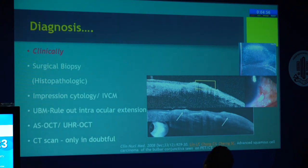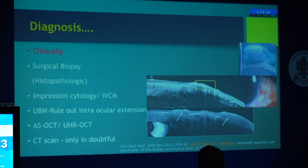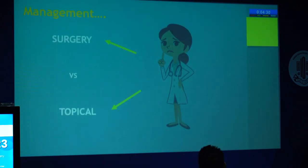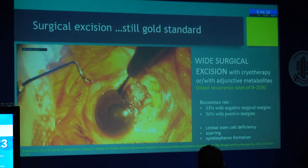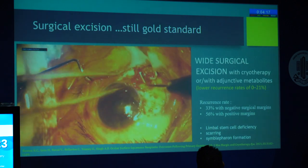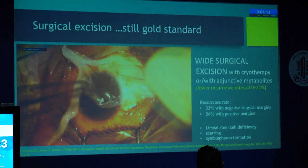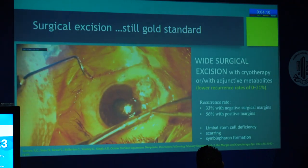Surgical biopsy is the gold standard for diagnosing these cases. We are more inclined towards non-invasive modalities like ultra-high resolution OCT or UBM to rule out any intraocular extension. Impression cytology, though not very confirmatory many times, has value. CT scan is only for doubtful cases where orbital extension is suspected. For management — surgery versus topical — wide surgical excision with cryotherapy with or without adjunctive antimetabolite is the gold standard with lower recurrence rate. But if the surgical margin is positive, recurrence rate is very high, and it may lead to limbal stem cell deficiency or scarring.